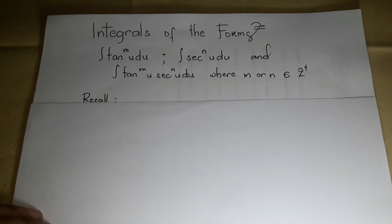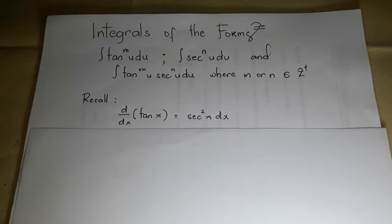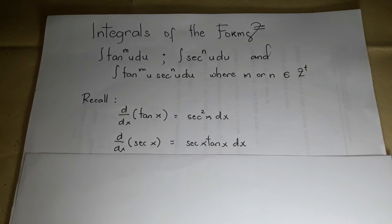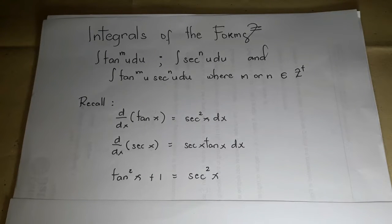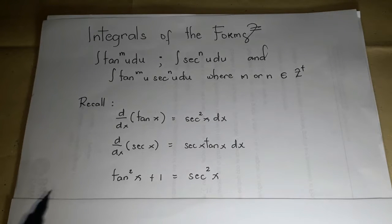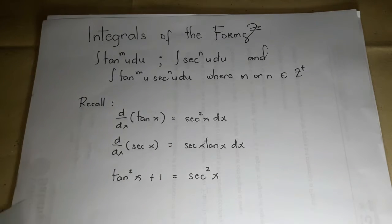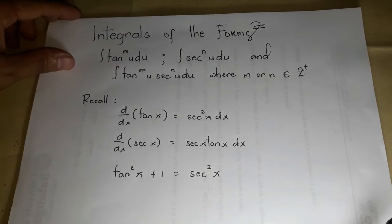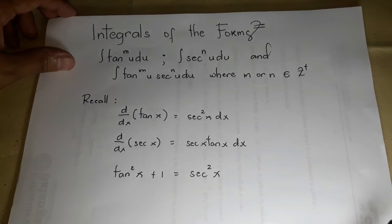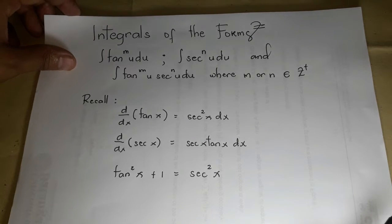For this group of integrals, we have to recall that the derivative of tangent x is secant squared x, and the derivative of secant x is secant x tangent x dx. We will be using the identity tangent squared x plus 1 equals secant squared x. We take the case where m or n are even or odd positive integers.